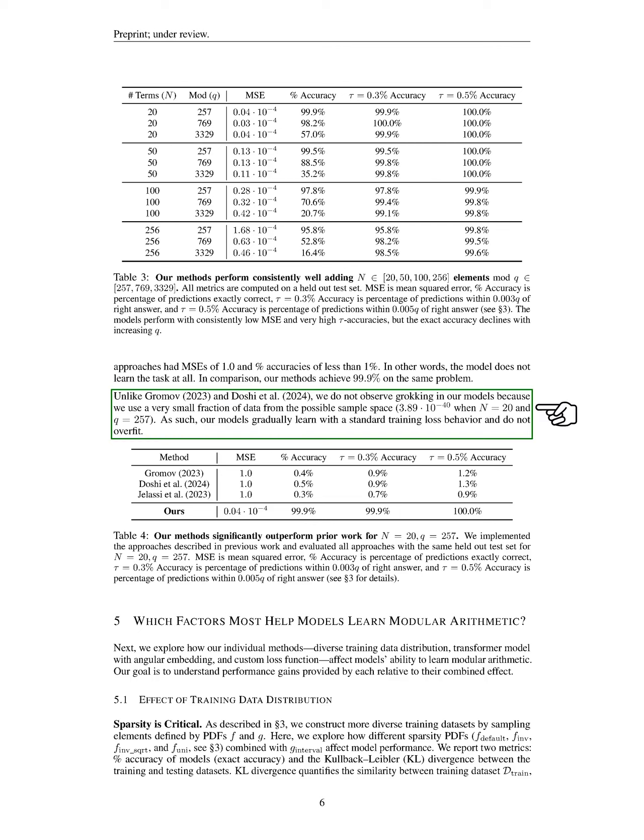Section: Which factors most help models learn modular arithmetic? In this section, we investigate how our various methods, such as diverse training data distribution, a transformer model with angular embedding, and a custom loss function, impact the ability of models to learn modular arithmetic. Our aim is to understand the performance improvements each method offers compared to their combined effect.